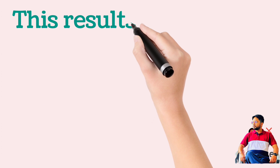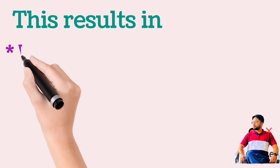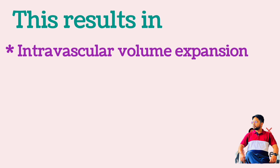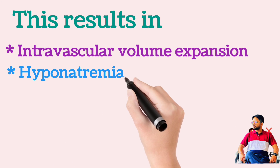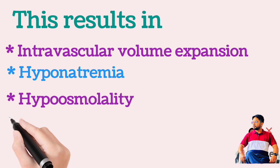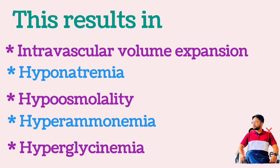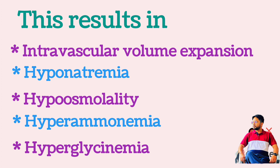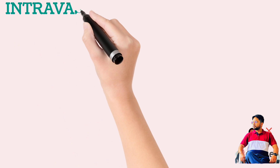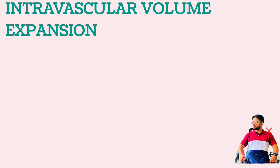The signs and symptoms of TURP syndrome are due to the following factors: intravascular volume expansion, hyponatremia, hyposmolality, hyperammonemia, and hyperglycinemia.